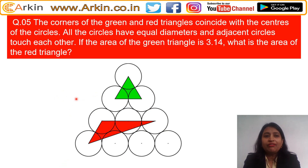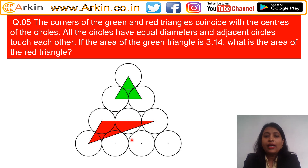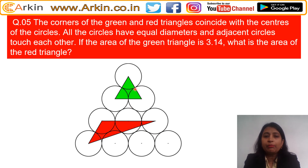Let's solve question number 5 of UC 2021 paper. This question says the corners of the green and red triangles coincide with the center of the circle. The corners are the centers of the circles, and all the circles have equal diameters — all circles are the same — and adjacent circles touch each other, not overlapping but just touching. If the area of the green triangle is 3.14, what is the area of the red triangle?